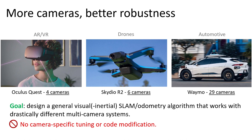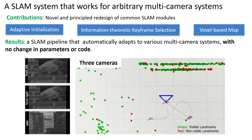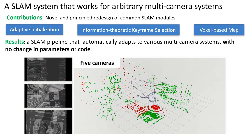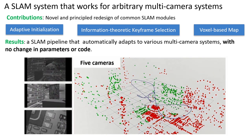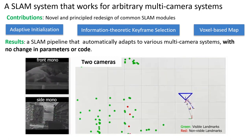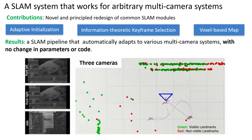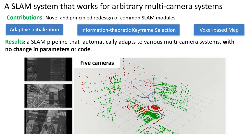In this work, we aim at designing a general SLAM system that adapts to arbitrary multi-camera setups. We want our system to be fully generic and require no tuning or code modification, even when the camera configurations are very different. To this end, we revisit some common SLAM building blocks and propose several novel designs, including an adaptive initialization scheme, an information-theoretic keyframe selection method, and a voxel-based map. As shown in the video, with our contributions, the resulting SLAM system can adapt to different cameras automatically with no manual adjustment in the code or parameters.